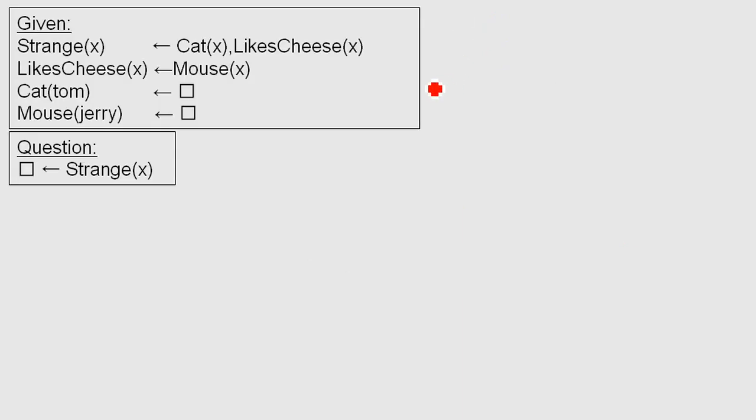Anyway, let's get going. This is given. I hope it's a good example. We have two facts. We have the fact that Tom is a cat and Jerry is a mouse. We have the relation that if X is a mouse then apparently X likes cheese. And we have the relation that if X is a cat and X likes cheese, then X is strange.